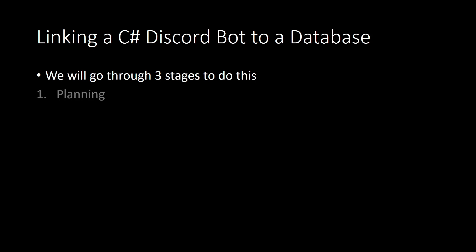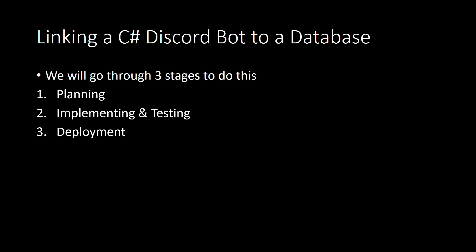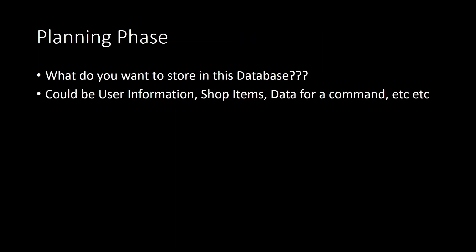Let's do this step by step. First, we'll plan our database — deciding what information we want to store and designing our tables accordingly. There's no point starting to code if you don't know what your database looks like. The next step is to implement this in our Discord bot — writing the code to store and retrieve data, and testing it as we go. The final step is to deploy it to our VPS or wherever we're hosting the bot.